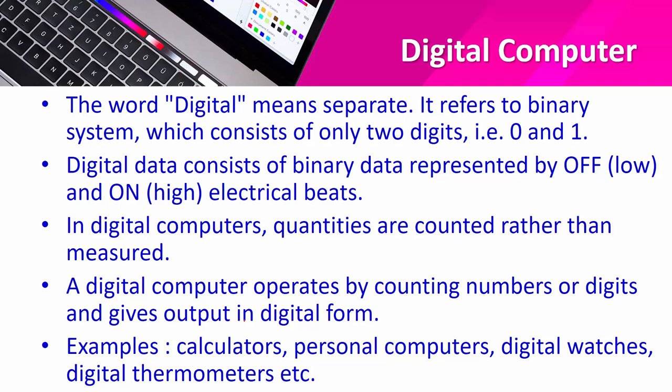Now let me explain the digital computer. The word 'digital' means separate. It refers to the binary system, which consists of only two digits: 0 and 1. All numbers between 0 and 1 — like 0.1, 0.2, 0.3 — belong to the analog domain, but in a digital computer it is either 0 or 1.